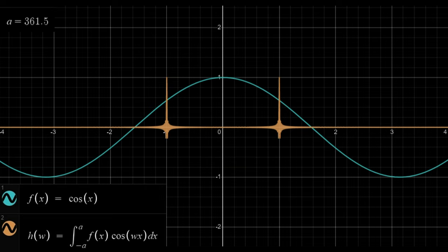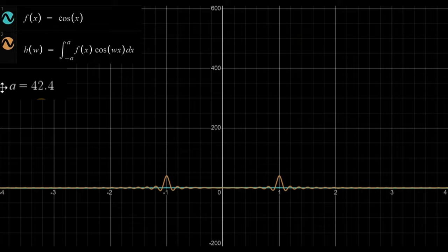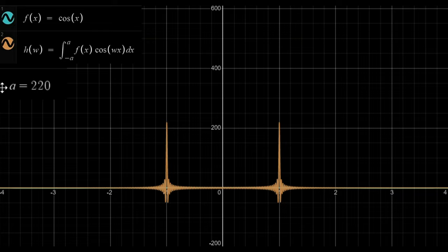Actually, I scaled down the transform so it would fit in the screen. Here's what it really looks like. It approaches zero everywhere, except for two spikes at plus and minus 1, where the area under the spikes approaches 1.